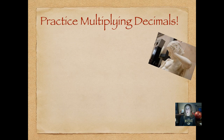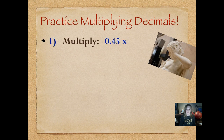Now we're going to practice multiplying decimal numbers — and it's kind of exciting that you're already multiplying decimals, which is really a 6th grade standard, but we're going to get a start on it. Using the strategy we just used, multiply 45 hundredths times 100. If you need to rewind and watch the example again, do that. Then do your work, push play, and see how you did.